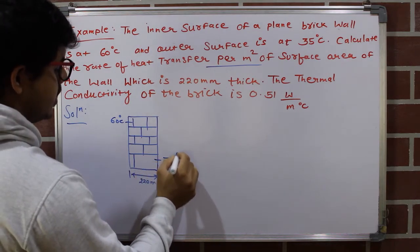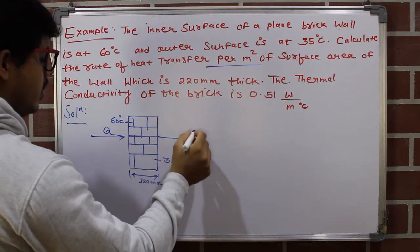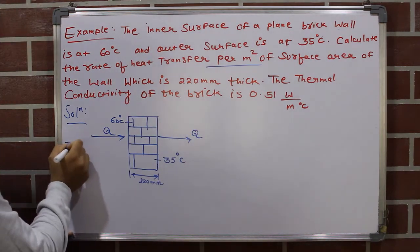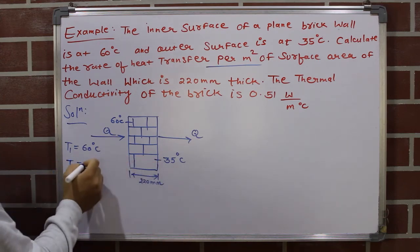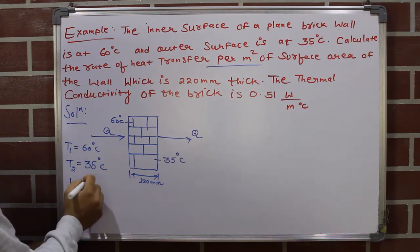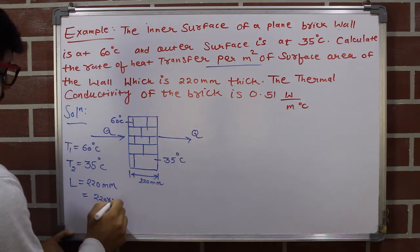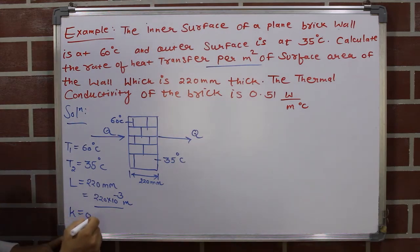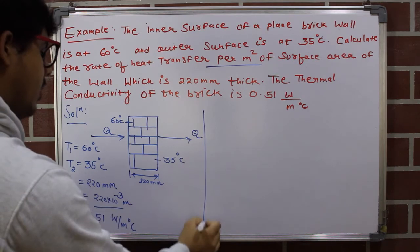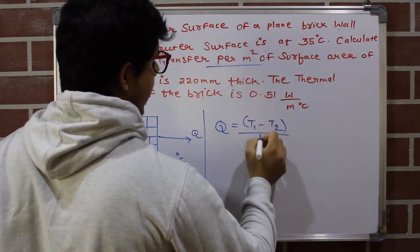The temperature at the outer surface is 60°C and at the inner surface is 35°C. Since heat always flows from higher to lower temperature, we mark the direction of heat flow. Given data: T1 (outer surface) = 60°C, T2 (inner surface) = 35°C, L = 220 mm = 220 × 10⁻³ m, and k = 0.51 W/m·°C.